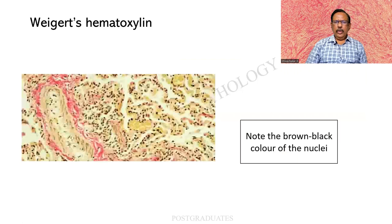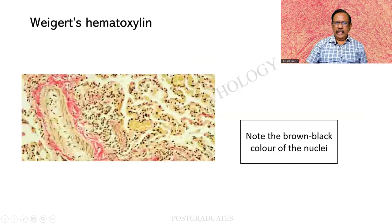Look at this one — this is the Weigert's Haematoxylin. Haematoxylin is always a nuclear stain; it can be black, brown, or brownish black. This is the Weigert's Haematoxylin. The first step in any of the special stains will be to do the nuclear stain. So this is Weigert's, and I am concerned only about the nuclei — they have been well taken up. I will be proceeding with the stain.